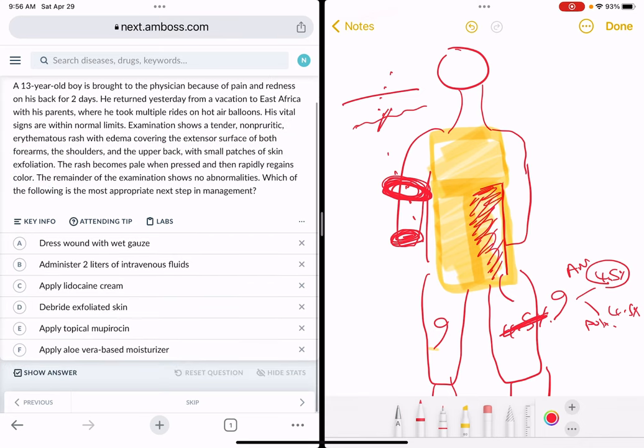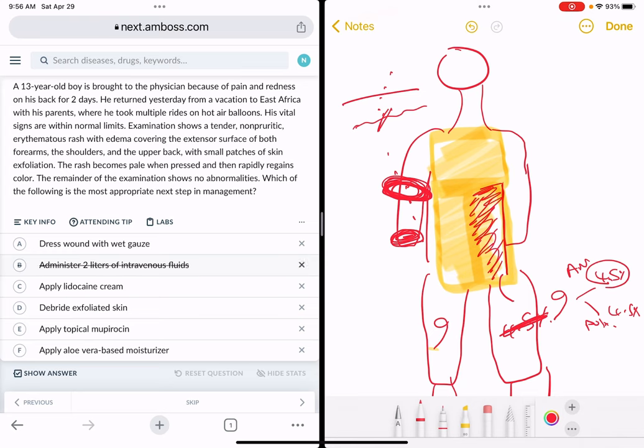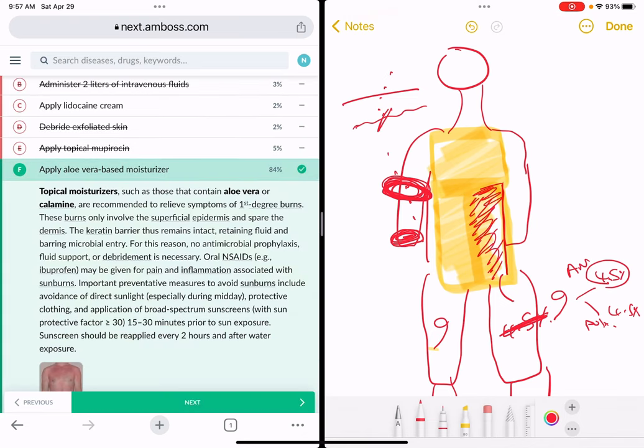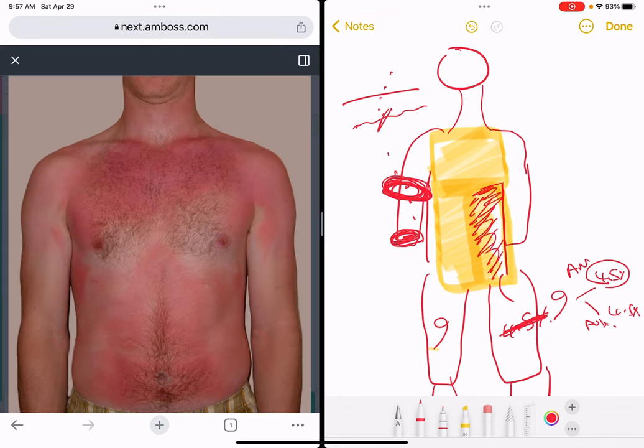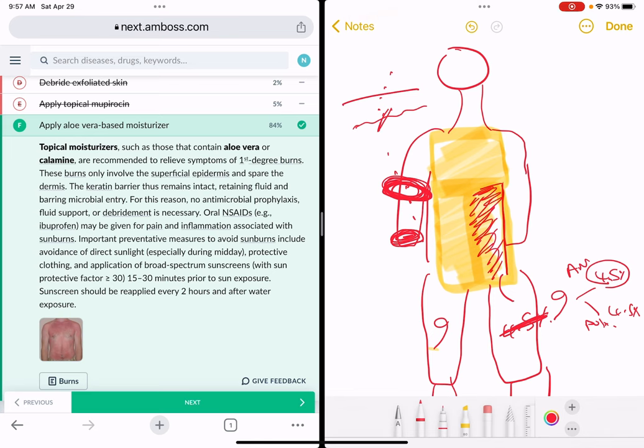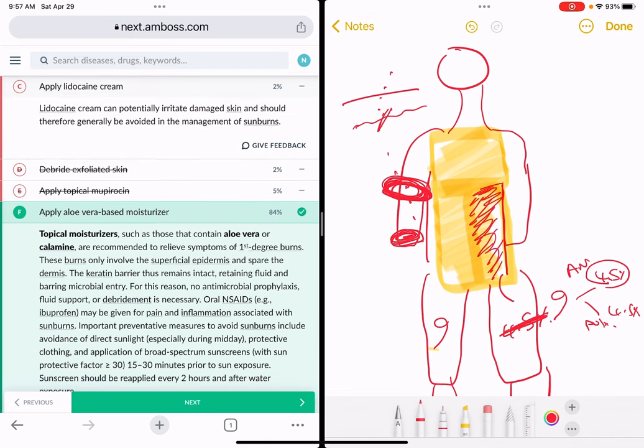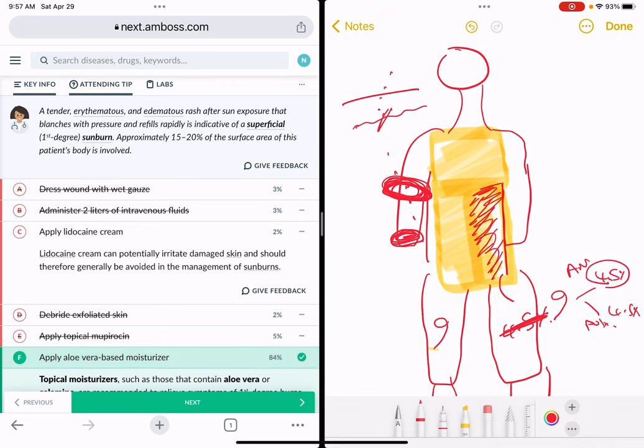This is typical sunburn, first-degree burn. There is no need to give IV fluids at all. In fact, it's not an open wound, it's just erythema, so we don't need to do dressing as well. We don't need to debride any skin. Applying topical antibiotics would only be appropriate if this were an infected wound or bacterial infection. So I would say we can apply a moisturizer, aloe vera-based. Lidocaine anesthetic is not really appropriate, so applying aloe vera-based moisturizer is the best way to target this. Here is what a sunburn looks like.